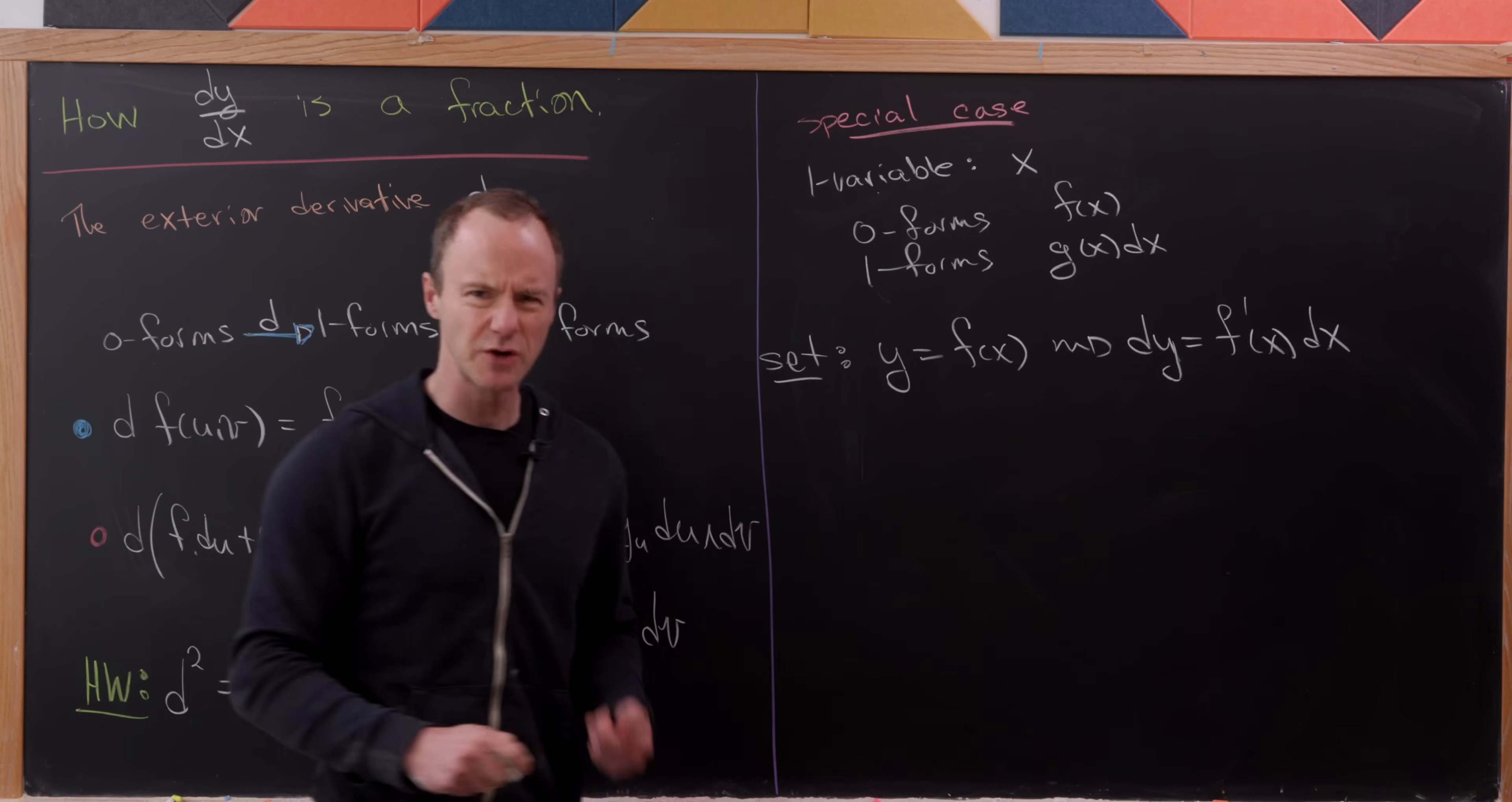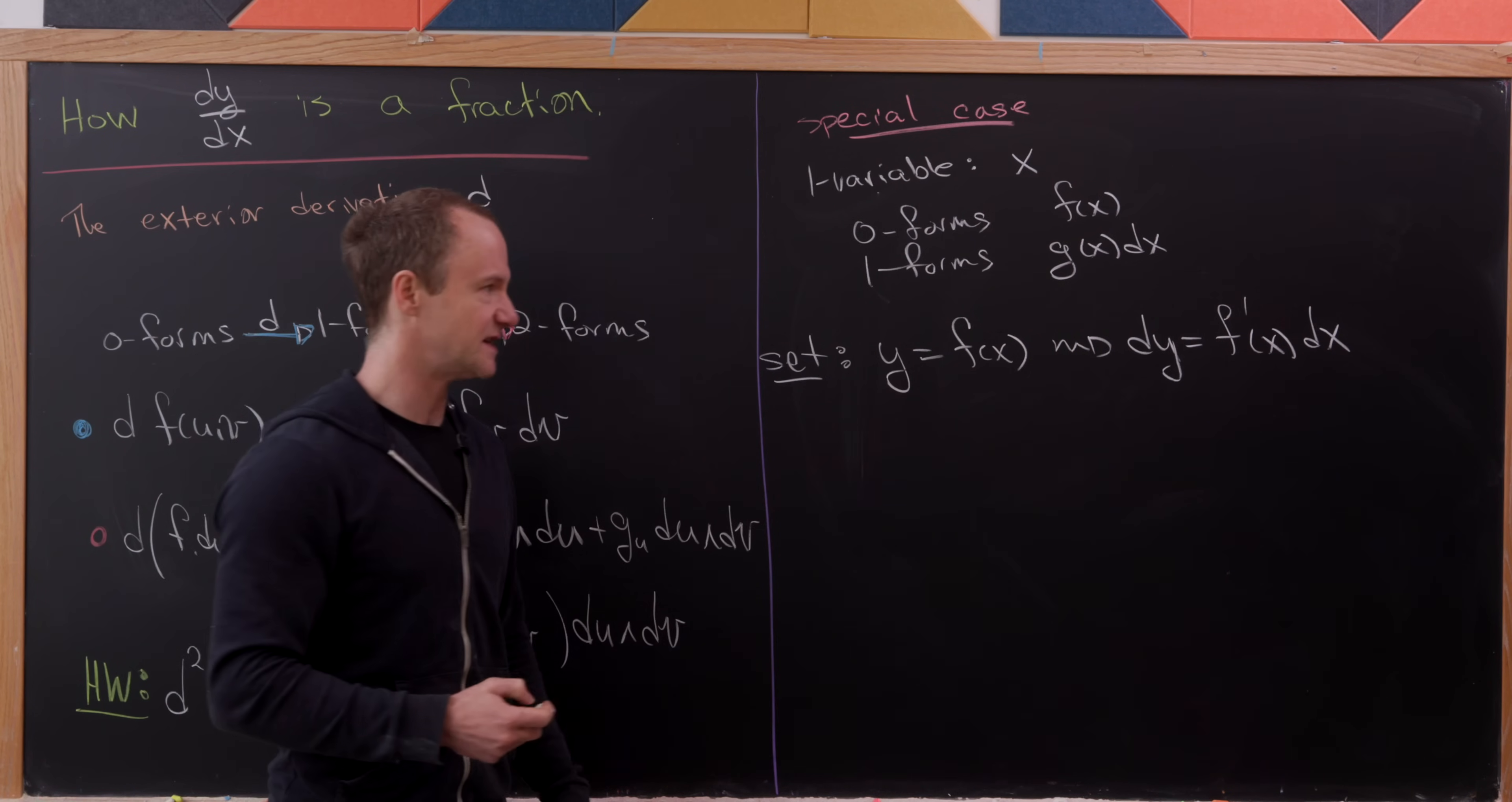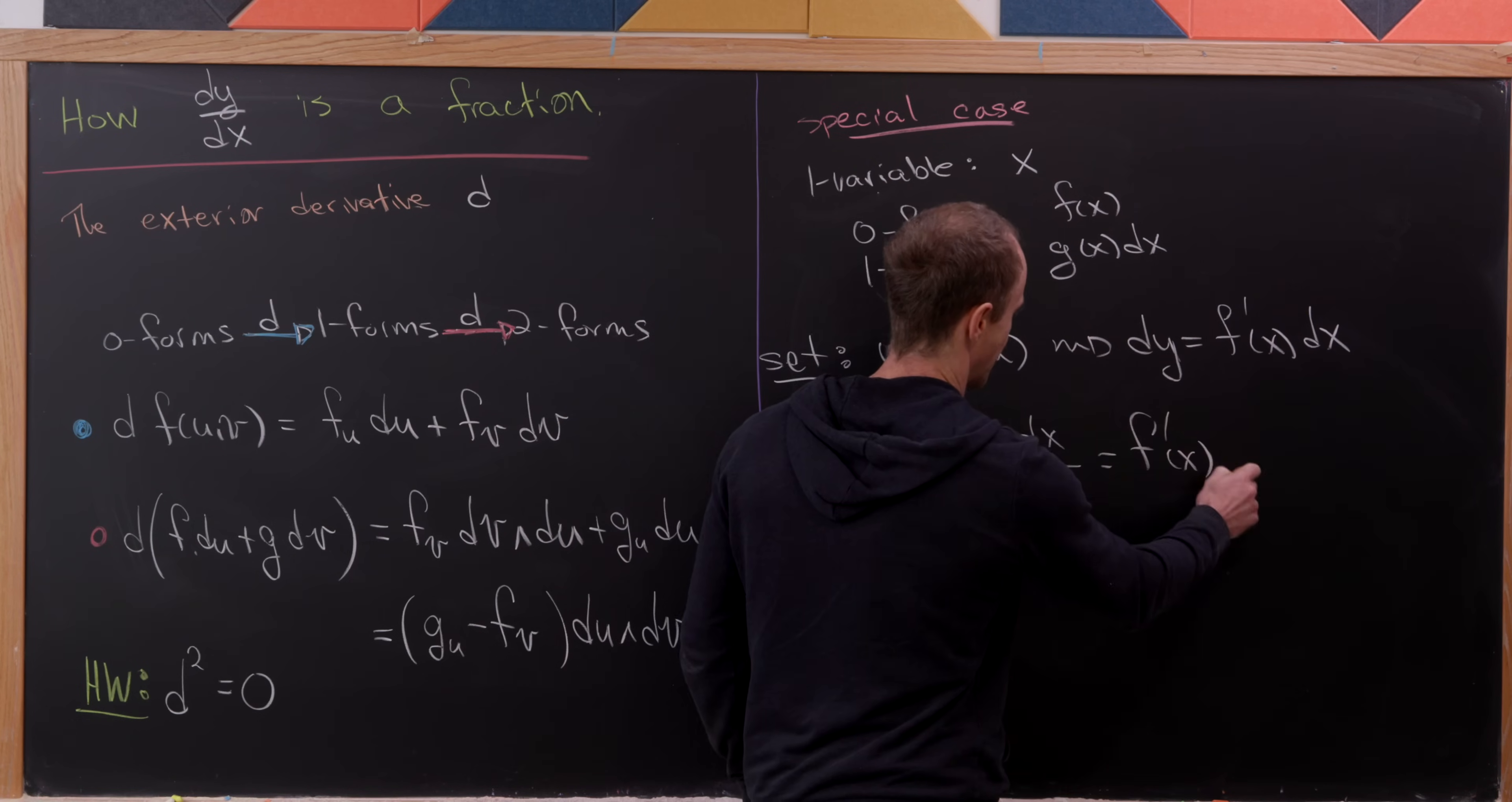You might say, well, it should be the partial of f with respect to x dx. But since there's only one variable here, the partial derivative and the total derivative are the same. But now I think you can probably see how this is going to go. So now let's look at the following. Let's observe that dy over dx is simply f prime of x dx over dx, which gives us f prime of x.